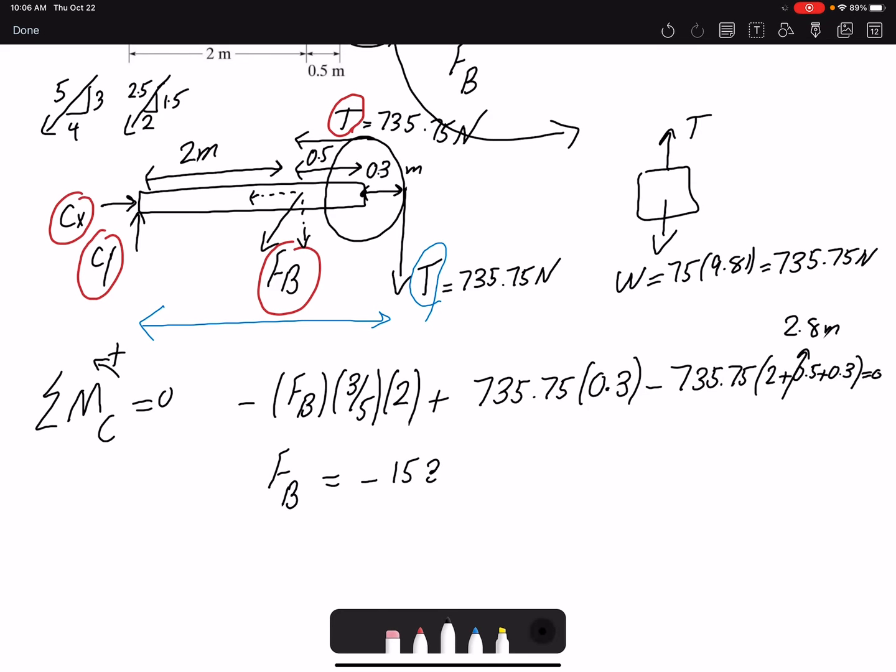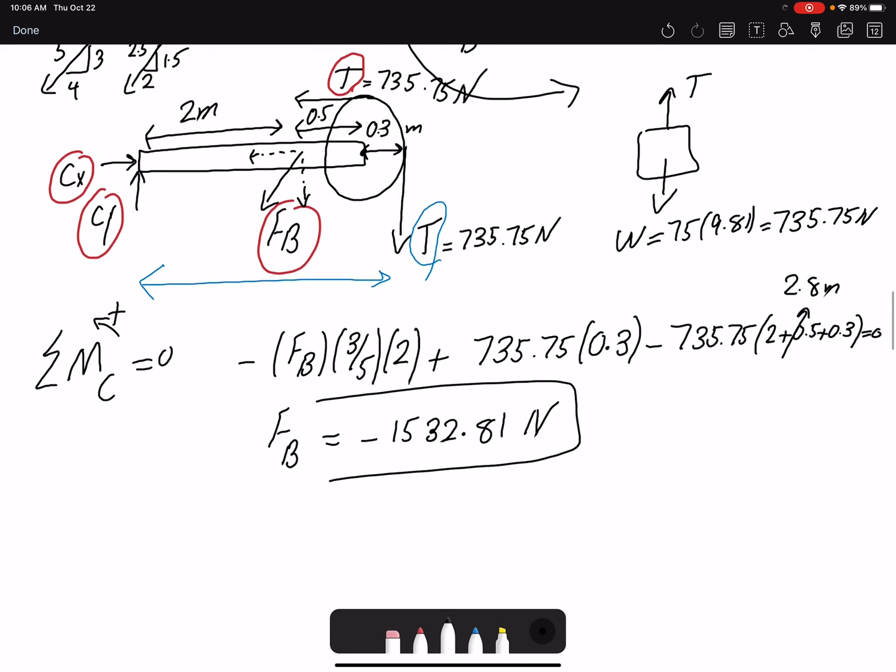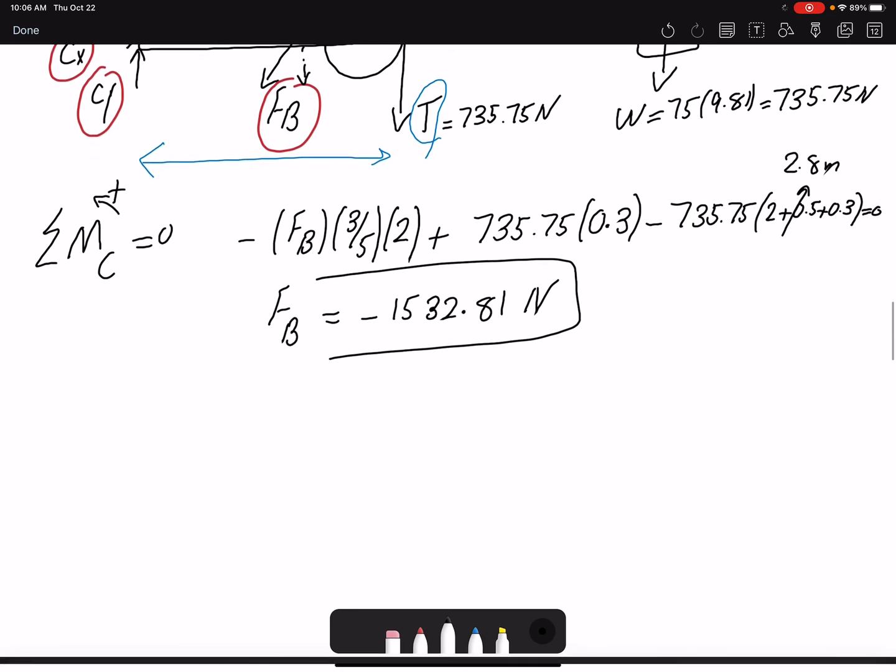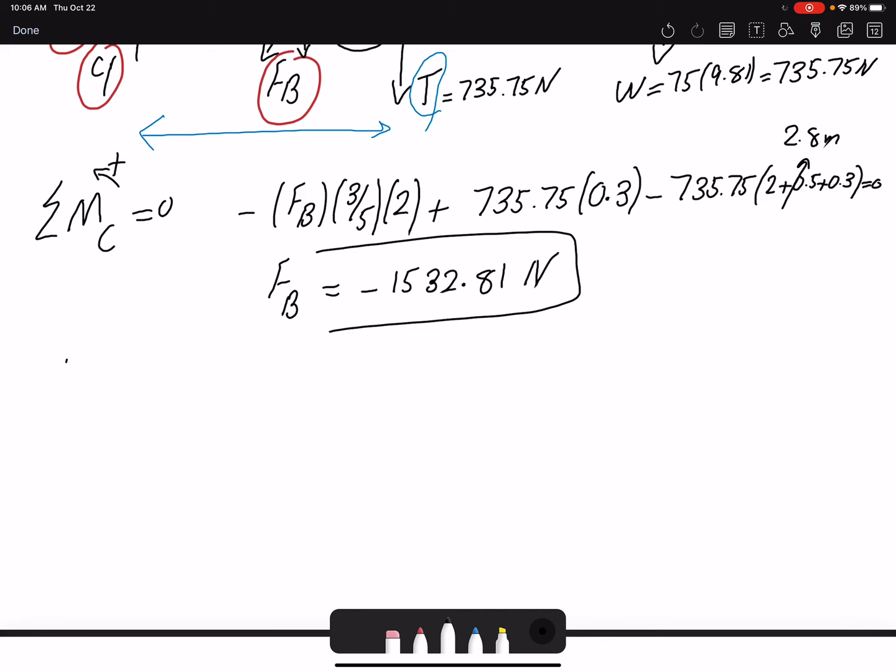And the value that I found is negative. That means that the direction I assumed is incorrect, is the opposite. But we are going to keep the direction in the free body diagram. So now that I have the value for FB, I can write summation of forces in X and summation of forces in Y to find CX and CY.